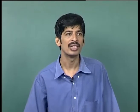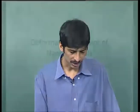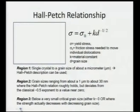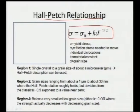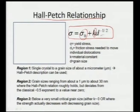There is a need for consistency in terms of developing a material with a consistent grain size, and understanding what is exactly happening at that particular scale is very important. A couple of theories have come across, starting from the very well-known Hall-Petch relationship, given by σ = σ₀ + k·d^(−1/2), where σ is the yield stress, σ₀ is the friction stress needed to move individual dislocations, k is a material constant, and d is the grain size.